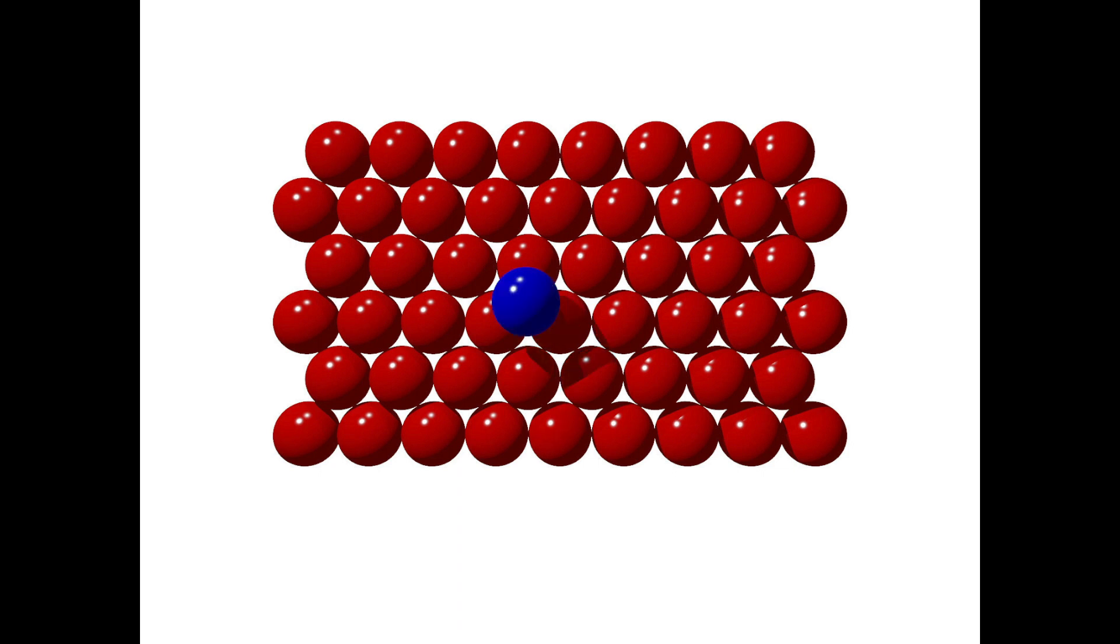A sphere placed on top of our first layer will naturally find its way to sitting in a triangular hole. This is a divot created by the first layer. Let's have a look at it from another angle.